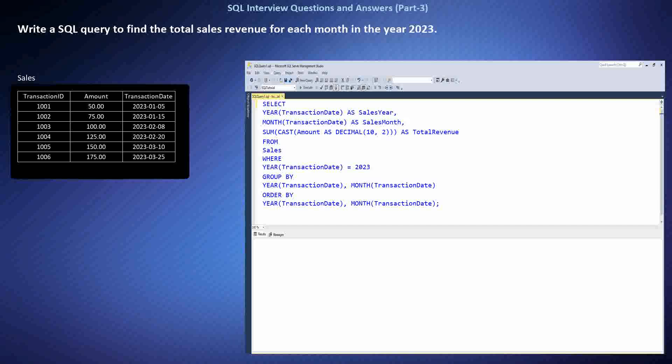To calculate the total sales revenue for each month in 2023, I used the YEAR and MONTH functions to extract the year and month from the transaction date column. Then I filtered the data to include only transactions from the year 2023 using the WHERE clause. Next, I used the SUM function to calculate the total revenue for each month. Finally, I grouped the results by year and month using the GROUP BY clause and sorted the output in chronological order. The result shows the total revenue for each month in the year 2023.